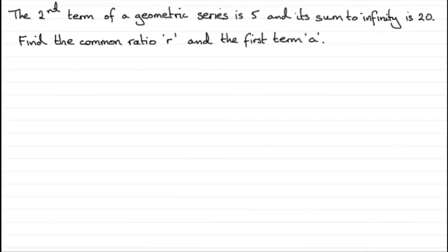Hi, now what I've got here is a typical example that you're likely to get if you're doing geometric series that involve the sum to infinity. So what we've got is the second term of a geometric series is 5 and its sum to infinity is 20. What we've got to do is find that common ratio r and the first term a.